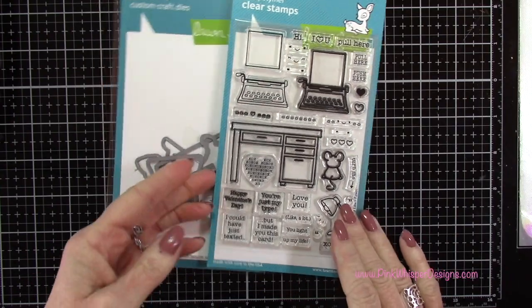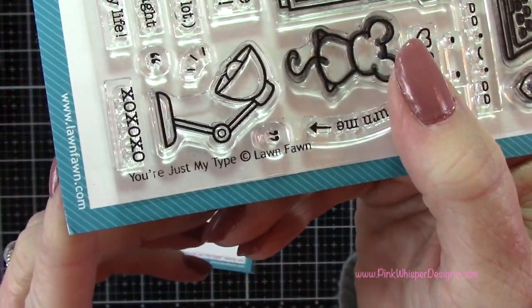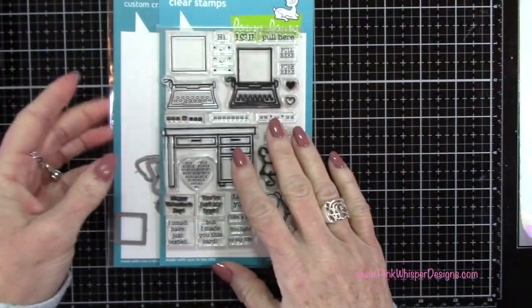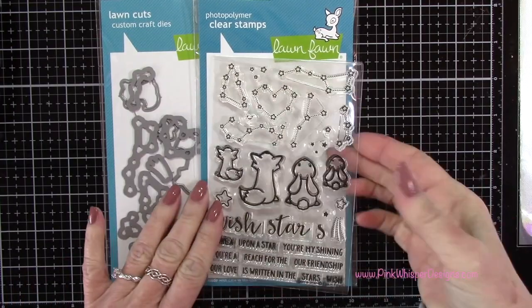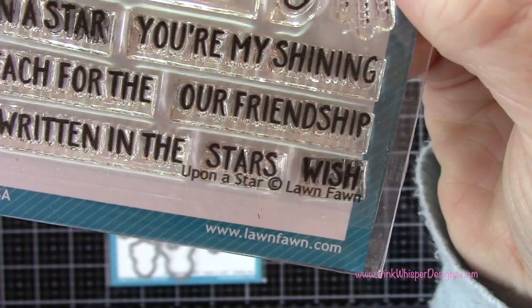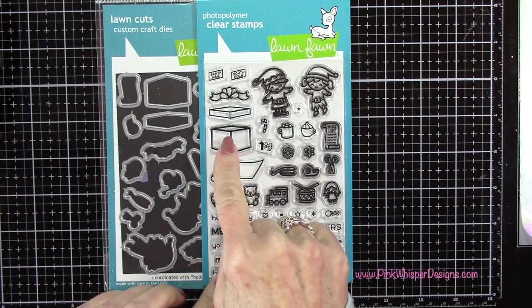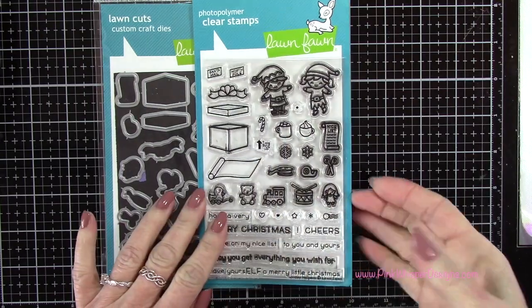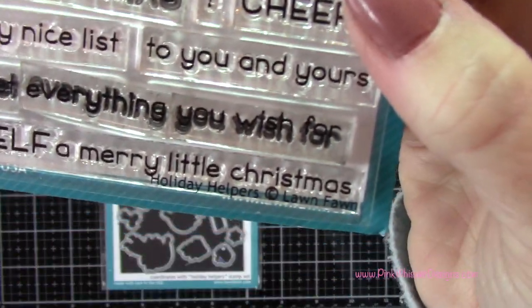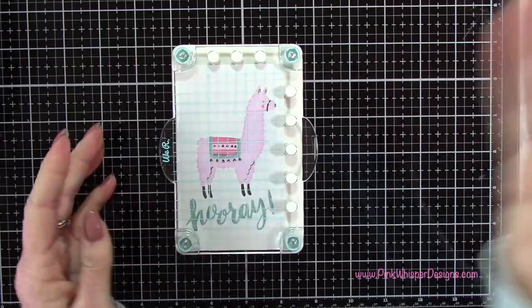We're going to start off with this stamp set here. This is a brand new stamp set called You're Just My Type and we're going to be using that desk and the coordinating dies. From this set we want the two little rabbits, this is from the upon a star stamp and die set. From this one we're going to take the bottom of that box and that mug, stamping that twice. This is from the holiday helpers stamp and die set.